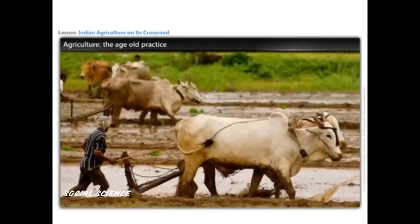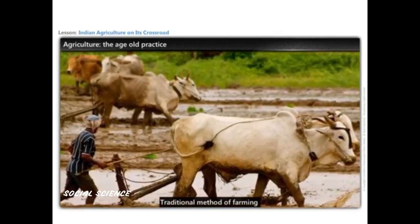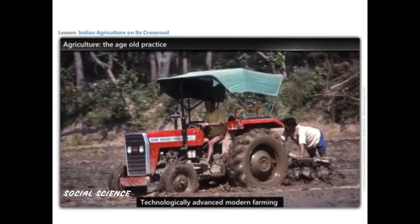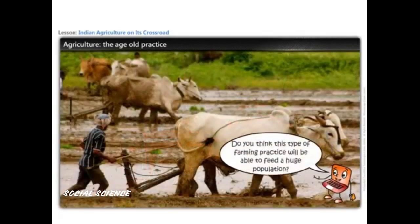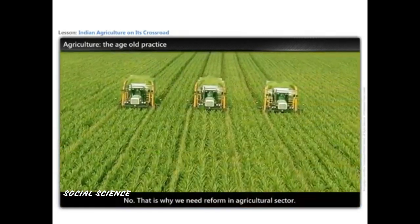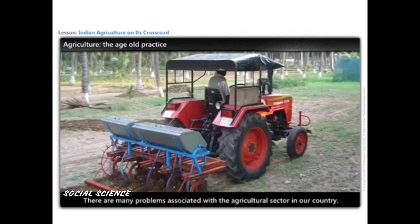In the first image, a farmer is using an age-old traditional method of farming; in the second, technologically advanced modern farming is practiced. Do you think traditional farming will be able to feed a huge population? This is why we need reform in the agricultural sector — there are many problems associated with agriculture in our country.